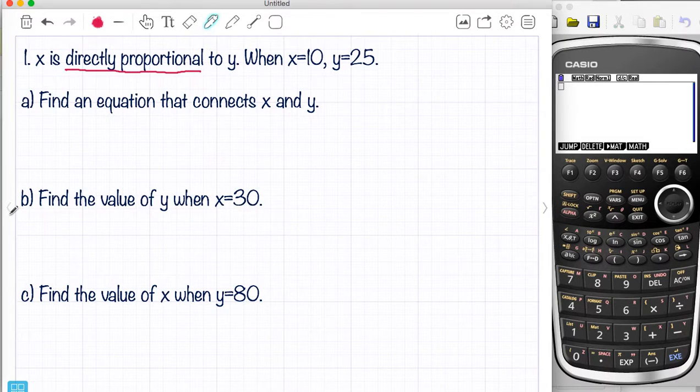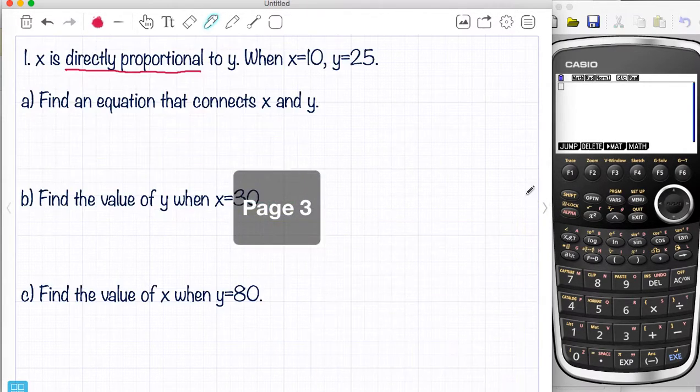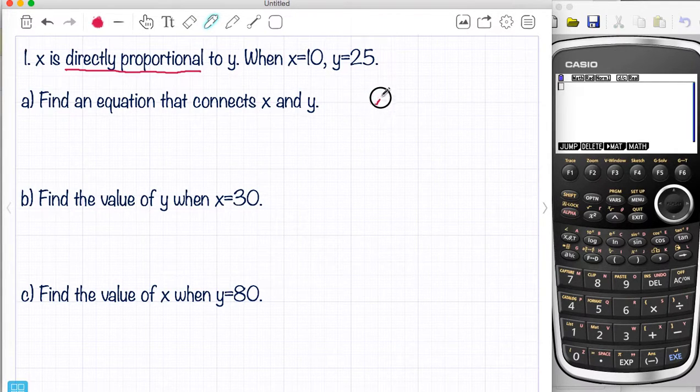Now because it's direct, my first thing that I'm going to write down is this: Y equals KX. So let's just write down Y equals KX. They then give us two different values. When X is 10, Y is 25. So let's just put that in. Y is 25, X is 10, so it's 10K.